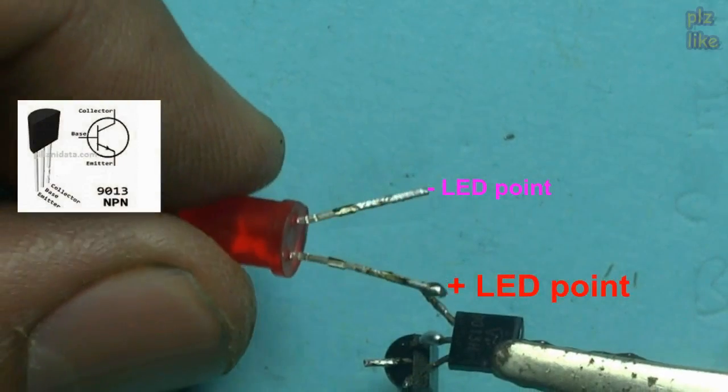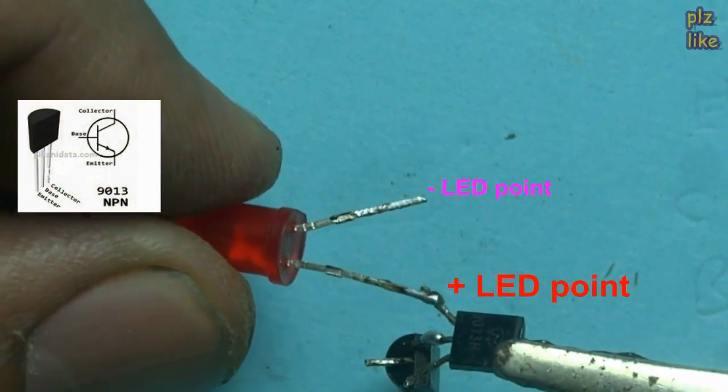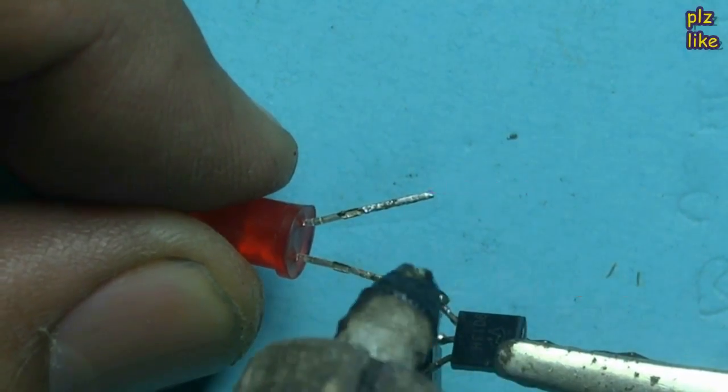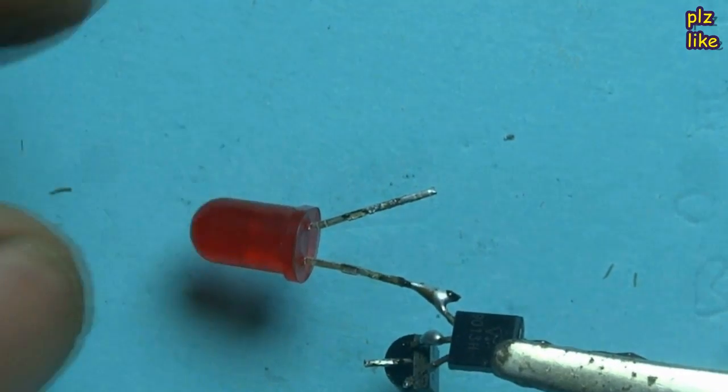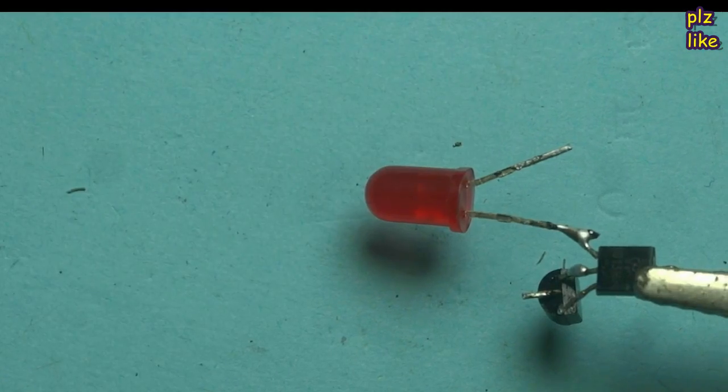Now we solder the LED. This is the plus point of the LED. I am connecting it with the collector point of the first transistor.